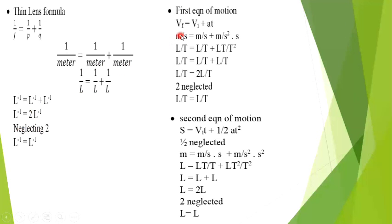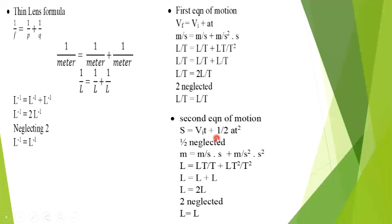For the equations of motion, the first equation is vf = vi + at. Velocity is meter per second, so dimension is L/T. Acceleration is meter per second squared, dimension LT⁻², and time is second, so acceleration times time gives L/T times T, which simplifies to L/T. We add them up and both sides have dimension LT⁻¹, so left-hand side equals right-hand side.